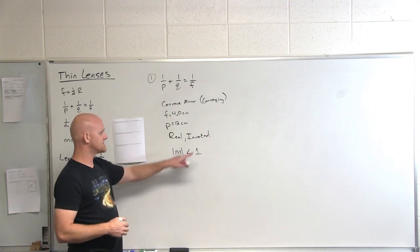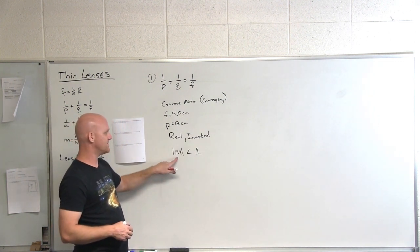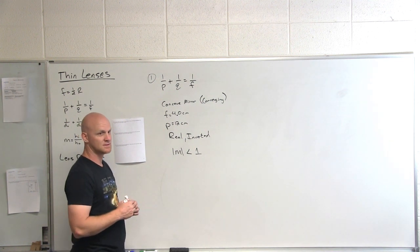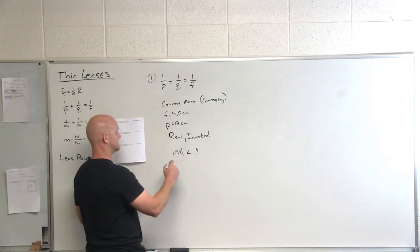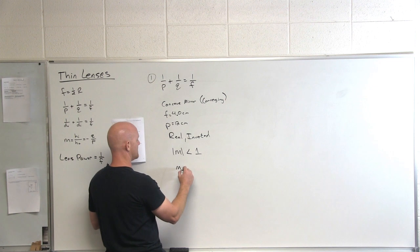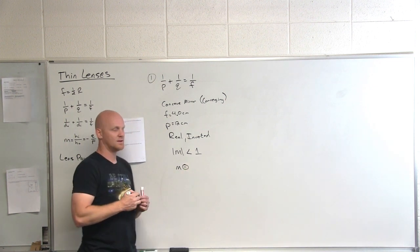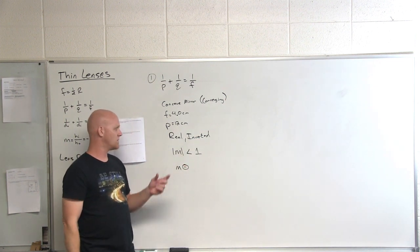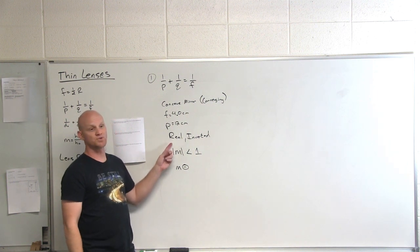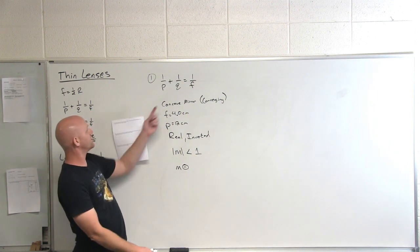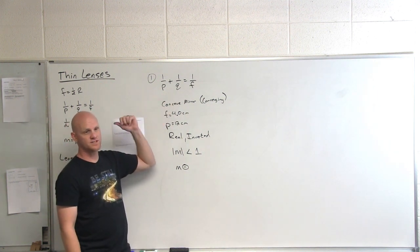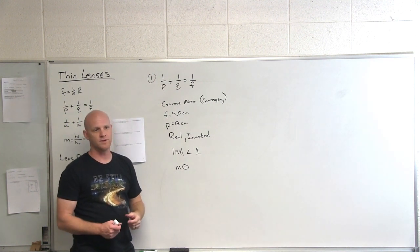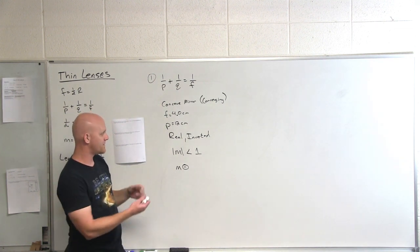Because the image is inverted, that implies the magnification is going to come out negative. With an inverted image, your magnification comes out negative. And because the image is real, our image distance Q, or DI, should come out positive. Let's work out the math.